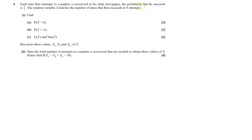Ben can complete a crossword in today's newspaper. The probability that it succeeds is two-thirds. X denotes the number of times Ben succeeds in nine attempts. So I've got X tilde binomial — there'll be nine trials and probability of success is two-thirds. That's what I've got for part one.